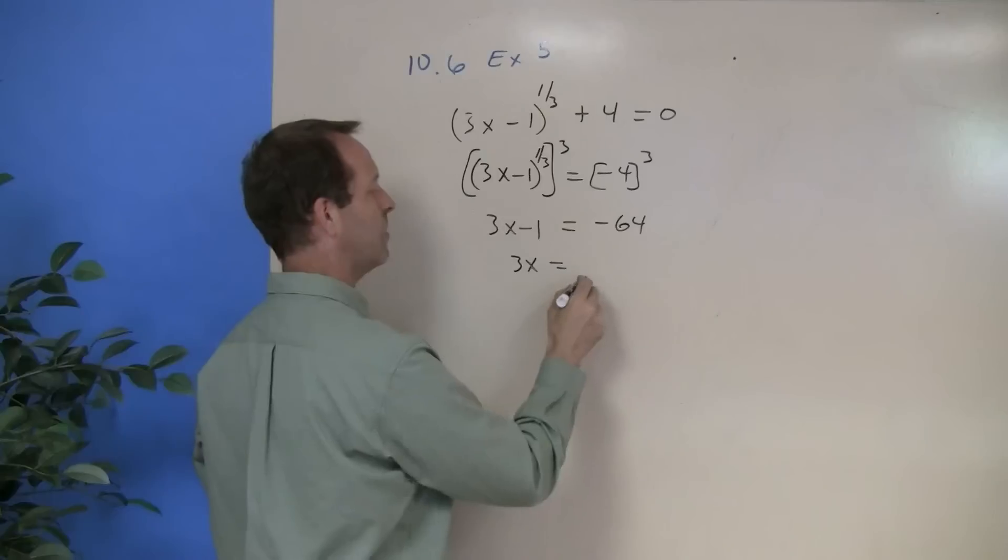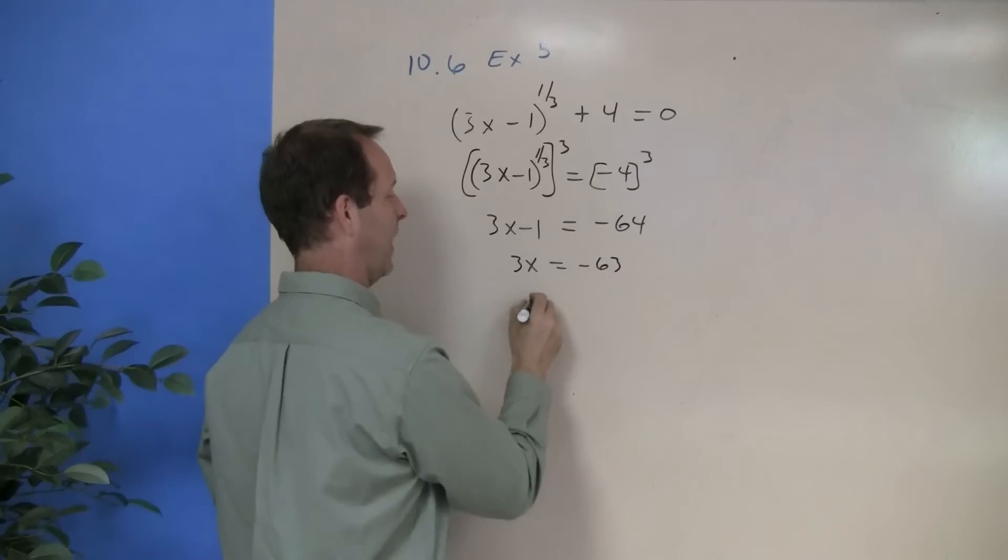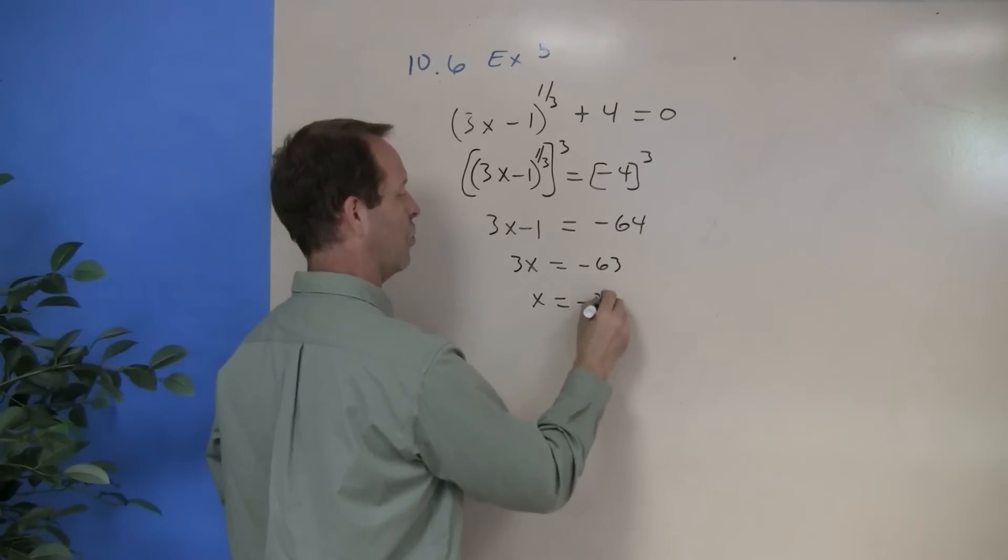3x subtract 1 from both sides gives me negative 63, and then x equals negative 21.